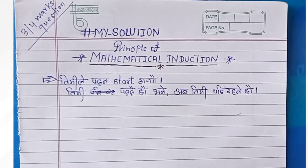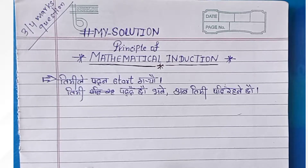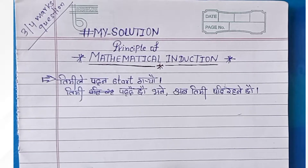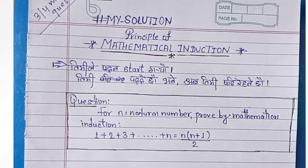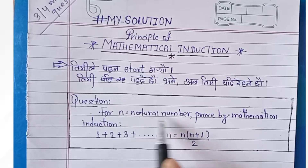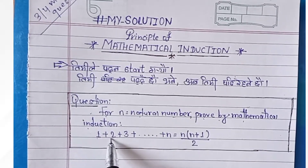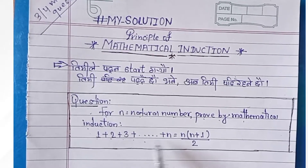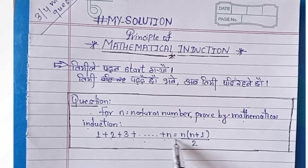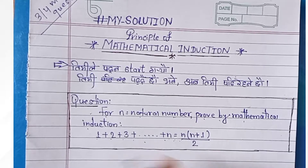Now I will read a question about mathematical induction and show how to solve it. The question is: For n equals a natural number, prove by mathematical induction that 1 plus 2 plus 3 plus dot dot dot plus n equals n into n plus 1 by 2.